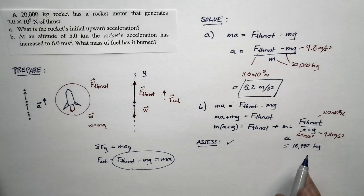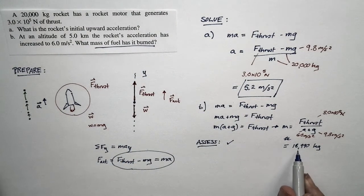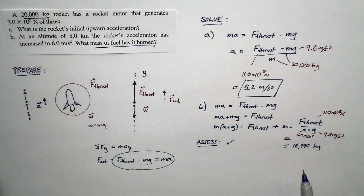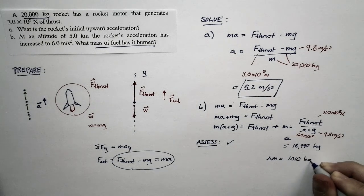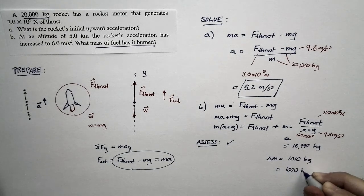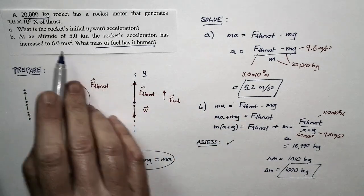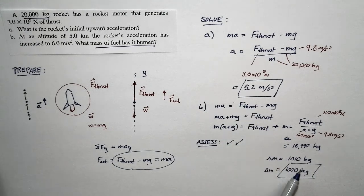I've kept a couple of extra significant figures since this is an intermediate calculation. But we weren't asked for the mass of the rocket — we were asked for the mass of fuel burned. The current mass of 18,990 kilograms is less than the initial mass of 20,000 kilograms. The difference is the fuel that's been burned: 1,010 kilograms, or rounding to two significant figures, 1,000 kilograms. Since the acceleration hasn't changed much, we don't expect the mass change to be large, so our assessment says: so far, so good. The answers mirror our expectations of how the world works.